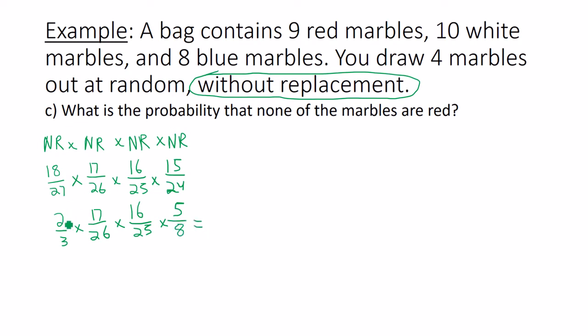Multiply the numerators together, get 2720. Multiply your denominators together, you'll get 15600. Divide the top by the bottom, and you'll get 0.174.